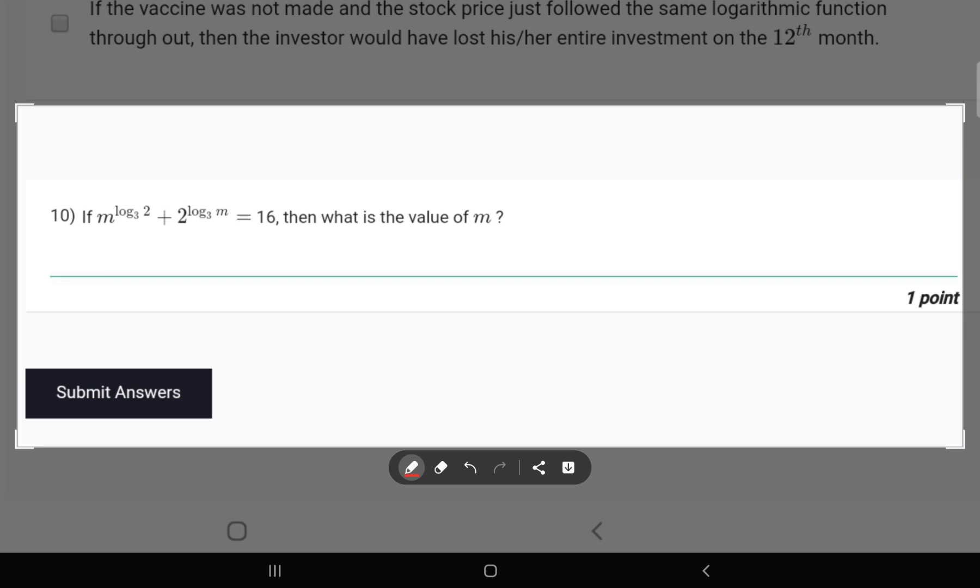So I am going to introduce a property that a to the power ln b is equal to b to the power ln a. Using this, we can say that m to the power log 3 equals 2 to the power log m to the base 3.